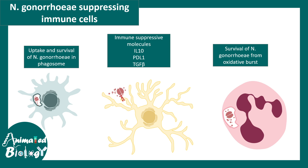N. gonorrhea can also be detected by specific TLRs, and instead of triggering pro-inflammatory cytokines, it sometimes induces anti-inflammatory cytokines. It also suppresses dendritic cells such that they cannot activate other T-cells. So, N. gonorrhea has a plethora of ways by which it can evade the immune response — which is fascinating but also very dangerous.